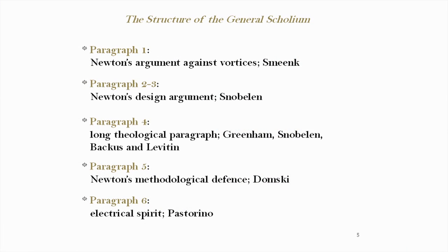Some details regarding the structure of the General Scholium. The General Scholium has six paragraphs. In the first paragraph, Newton argues against vortices, and this will be addressed by Chris Smeenk. In the second and third paragraph, Newton offers his famous design argument, and this will be analysed by Steve. The fourth paragraph is the long theological paragraph, and this will be analysed and contextualised by Paul Greenham, Steve Snowblen, Irena Bacchus, Dimitri Levitin, and by myself.